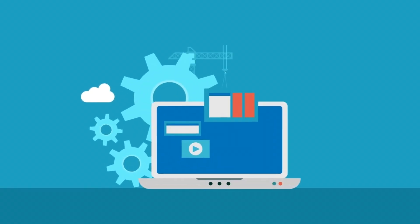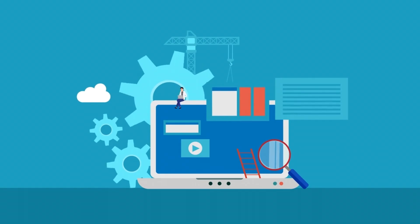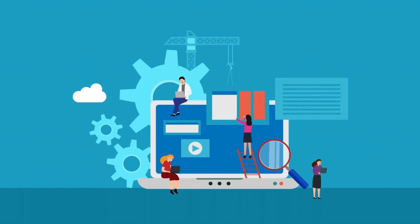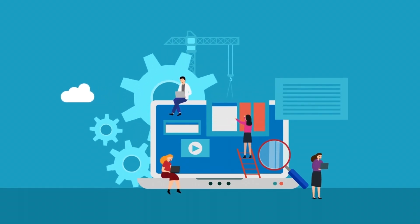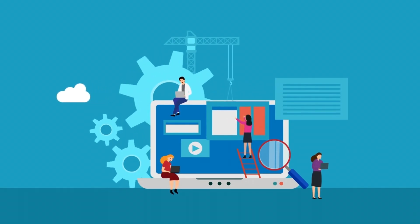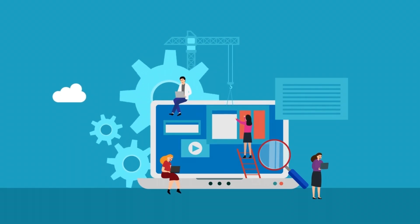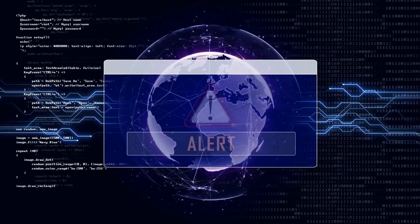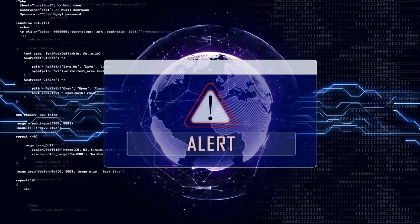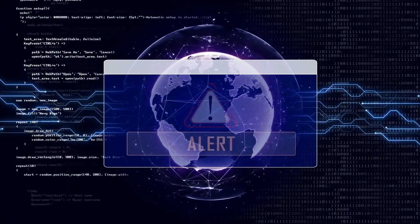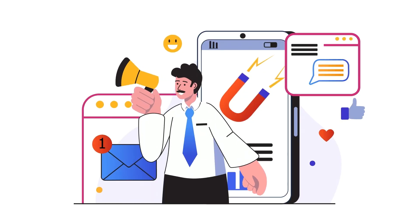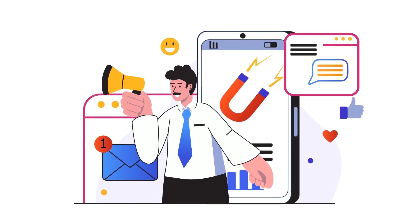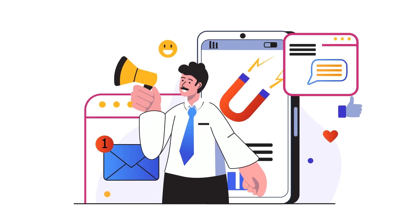This means they can see every website that you visited. Typically, this wouldn't be a problem if they kept your internet activity private. However, there is a possibility that your ISP could share your information with third parties, such as advertisers or even the government. If this happens, your internet activity is no longer private.